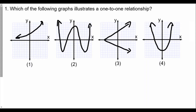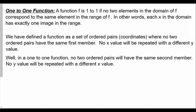The first thing about one-to-one functions is that a one-to-one function is definitely a function. Question number one says: which defined graph illustrates a one-to-one relationship? A one-to-one function — a function f is one-to-one if no two elements in the domain of f correspond to the same element in the range of f.